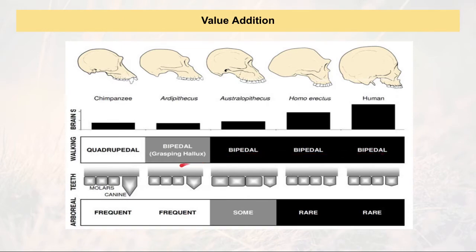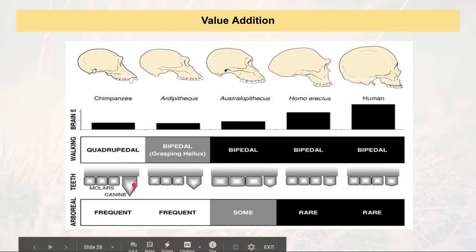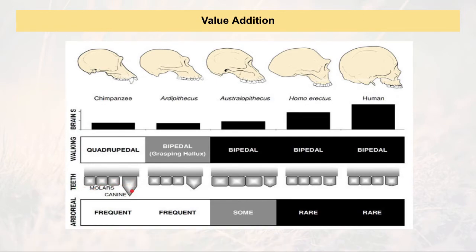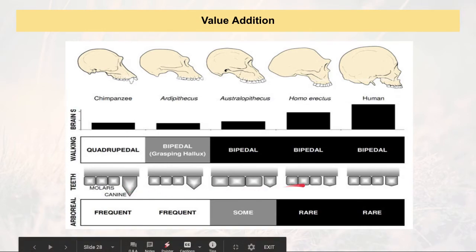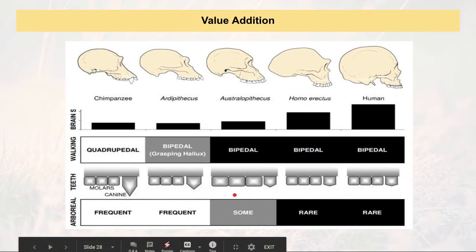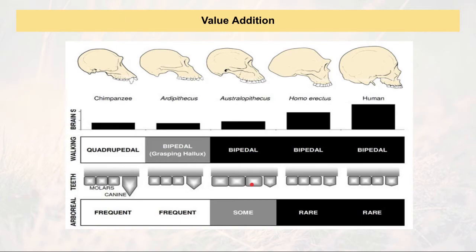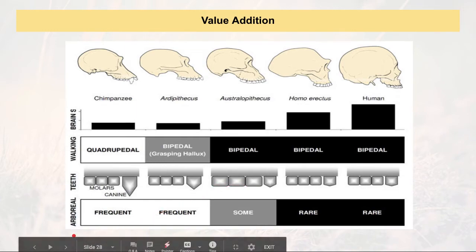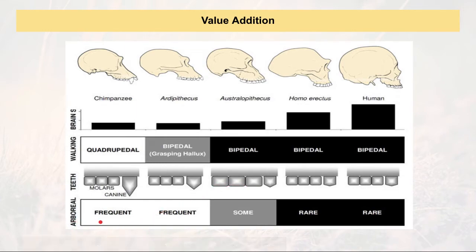Looking at the comparative diagram: canine teeth are very large in chimpanzees and slowly become smaller toward modern humans. Molar teeth in Australopithecus are very large as we have seen with Paranthropus. For arboreal versus terrestrial behavior, chimpanzees were arboreal, and Ardipithecus as the earliest ancestors also spent much time in trees.